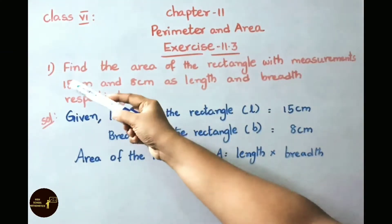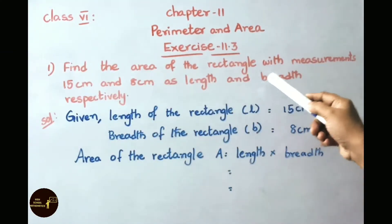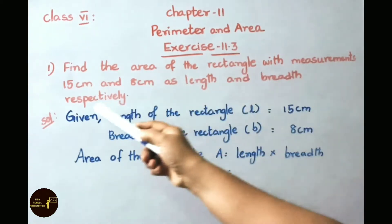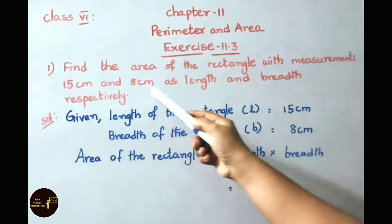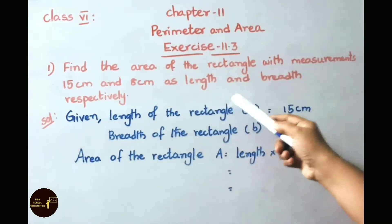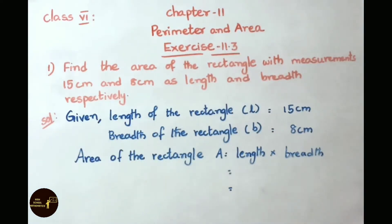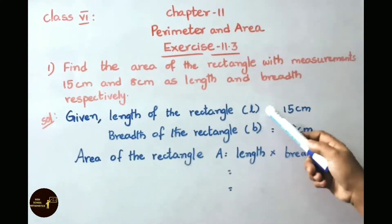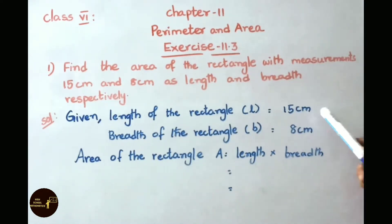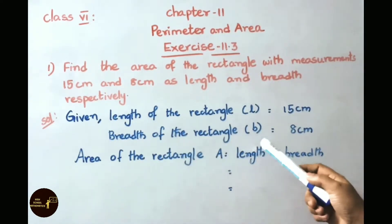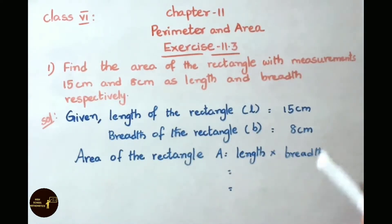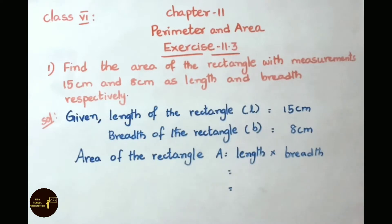Let us see the first sum. Find the area of the rectangle with measurements 15 cm and 8 cm as length and breadth respectively. Given: length of the rectangle L equals 15 cm, breadth of the rectangle B equals 8 cm.